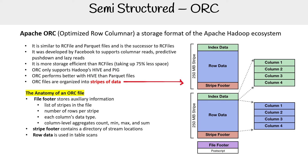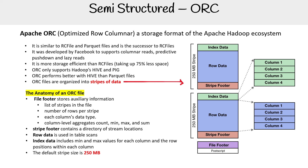We have the row data, which is used for table scans, and the index table includes min and max values for each column and the row positions for each column. The default size of a stripe is 250 megabytes — large stripe sizes enable large, efficient reads for HDFS, which is the Hadoop file system, which we'll talk about when we get to the Hadoop section.